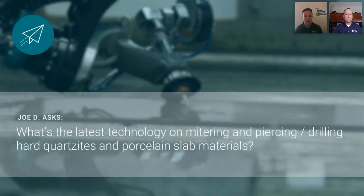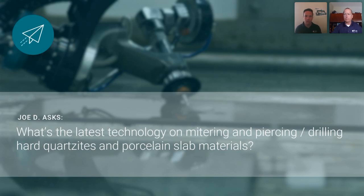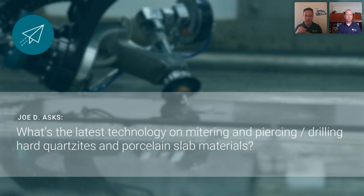A question from Joe: what's the latest technology on mitering and piercing for hard core sites and porcelain slab materials? Porcelain is a very brittle material that's prone to chipping. The two advantages at Flow are in your programming and in our patented technology. Programming tips include your lead-ins and lead-outs, and also what we call vertical piercing — it's recommended to start your lead-in as a vertical pierce and then shift into a miter or bevel degree cut. This is very attainable and easy to do in Flow Expert software. The second advantage is our Ultra Pierce patented technology.